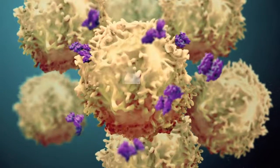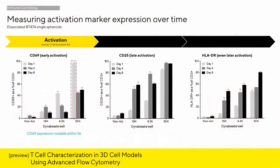To assess the cytotoxic effects of T cells on tumor spheroid proliferation, identical plates were set up and dissociated across a range of days to perform subset and cytokine analysis over time, utilizing a range of IQ kits.